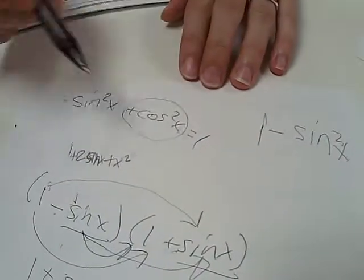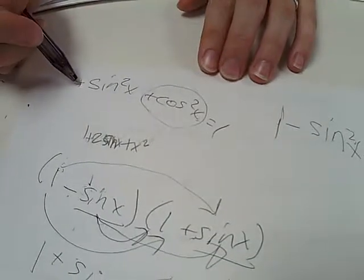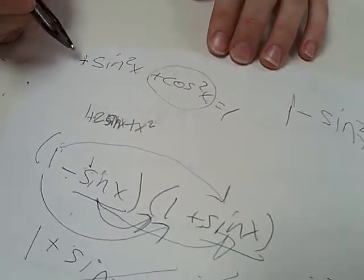Sine squared x plus cosine squared x equals 1. So then, if we want to solve for that cosine squared x, this is attached by addition, right? So how do we get rid of that?